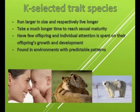K-selected trait species run larger in size and respectively live longer, take a much longer time to reach sexual maturity, have few offspring with individual attention spent on their offspring's growth and development, and are found in environments with predictable patterns.